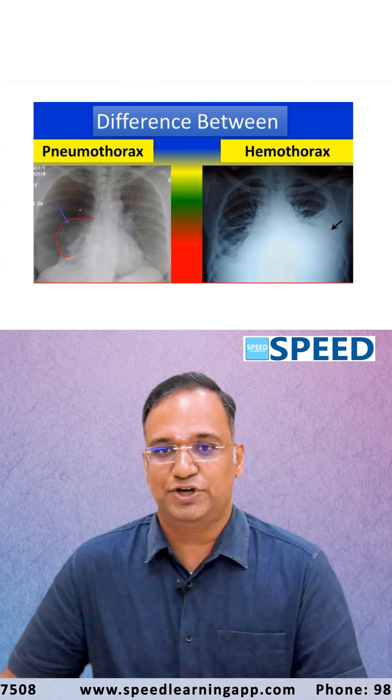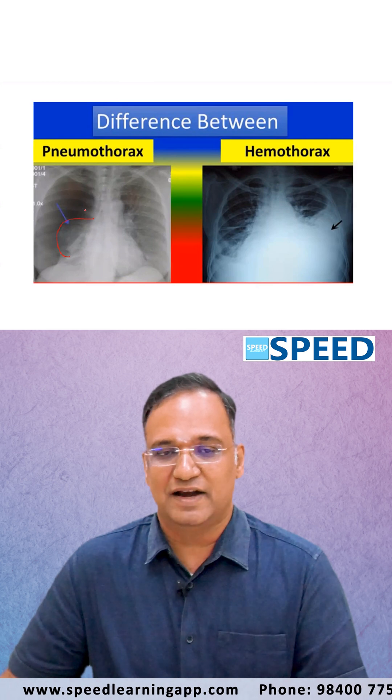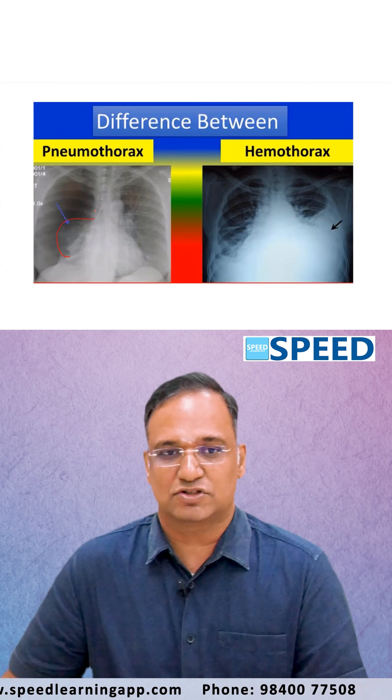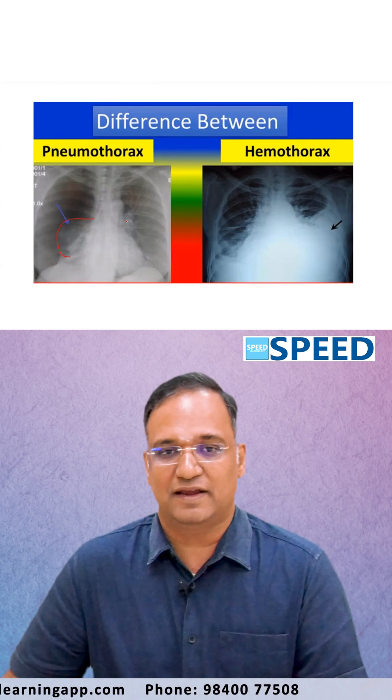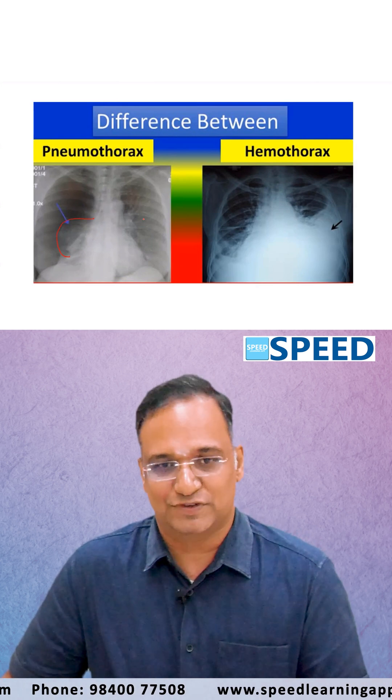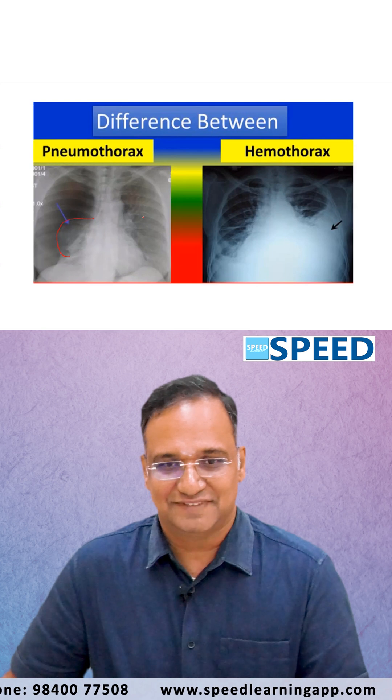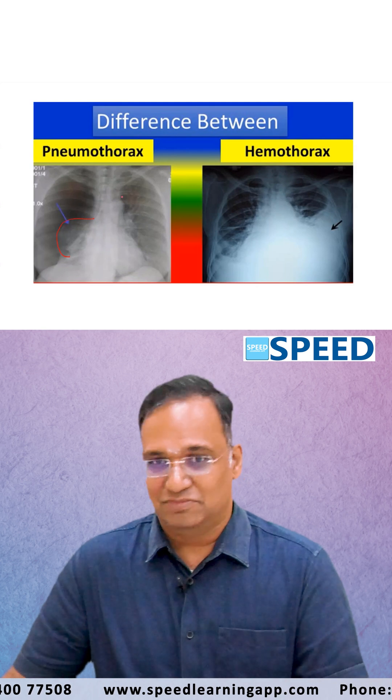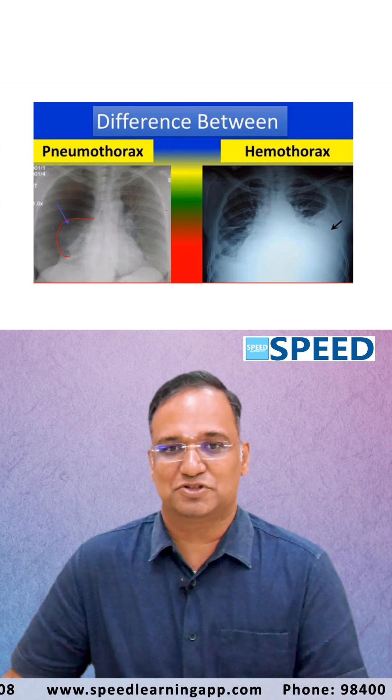For tension pneumothorax, you need to put a wide bore needle in the second intercostal space, followed by an intercostal drainage tube in the triangle of safety. This is a very important question for exams.